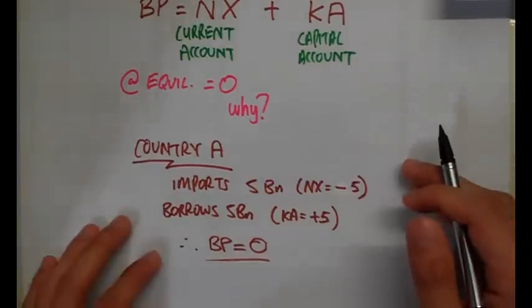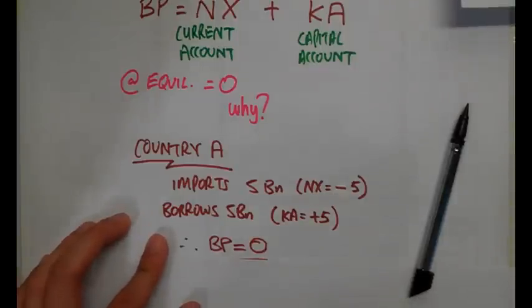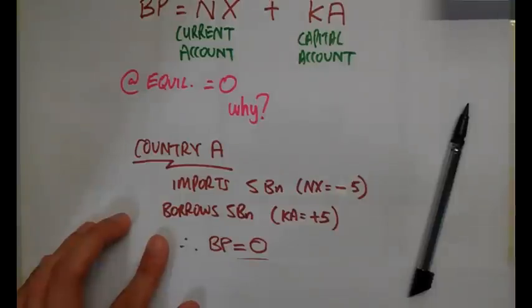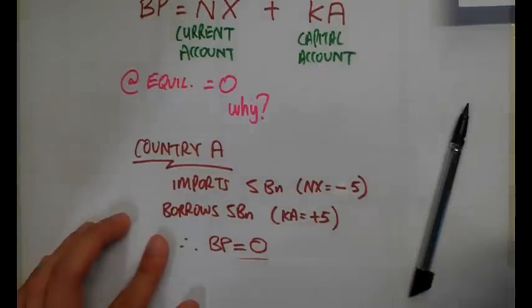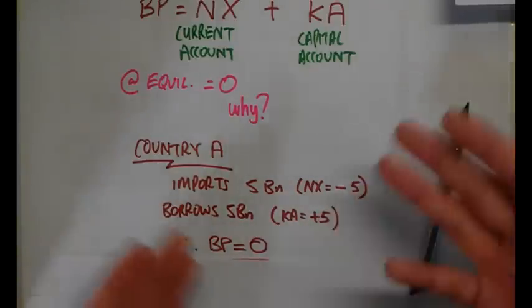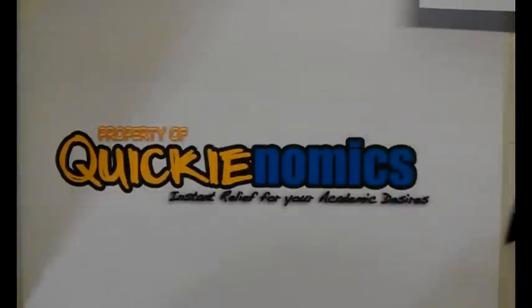This works the other way as well. If, due to high interest rates, five billion dollars flows into country A, those foreign lenders had to convert their currency into country A's currency first. Country A will then use that borrowed five billion to import goods. This balances everything out to zero, which is why the balance of payment equals zero.